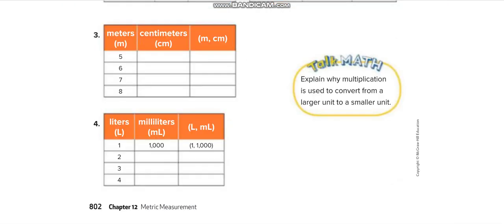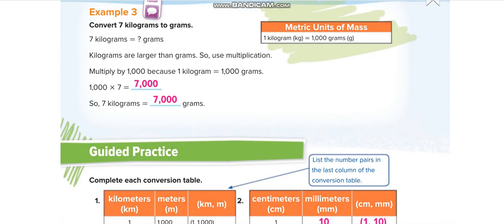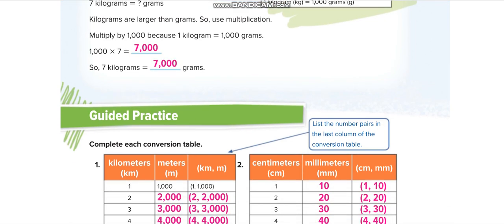Moving to page 802 — one kilogram equals 1,000 grams. So when converting kilograms to grams, we multiply by 1,000. For example, 7 kilograms times 1,000 equals 7,000 grams. Now let's move to the guided practice.